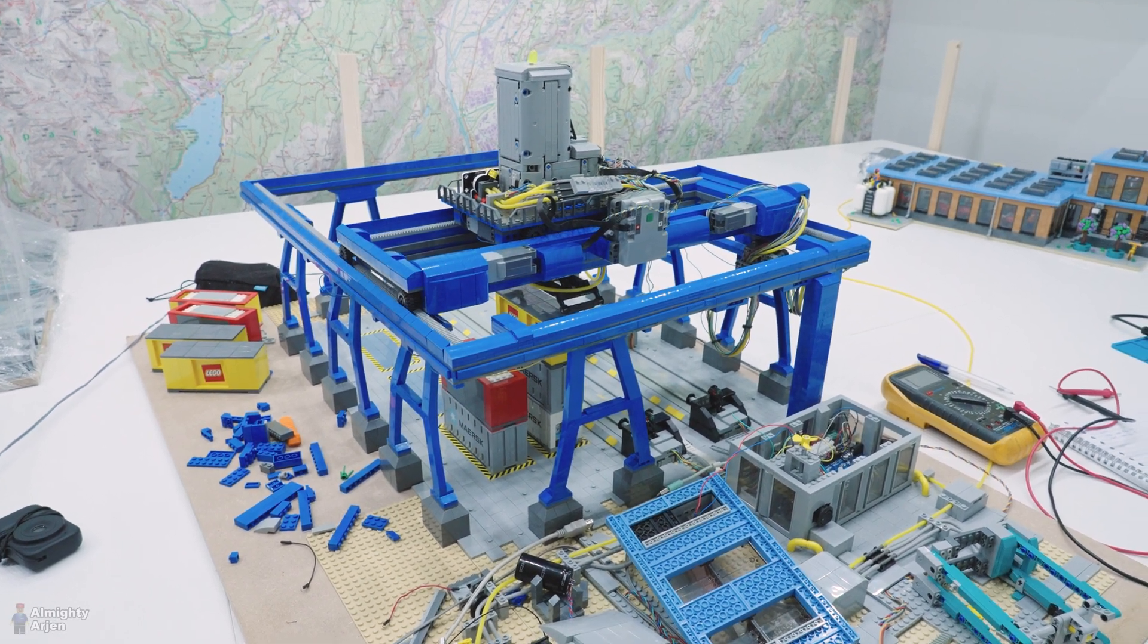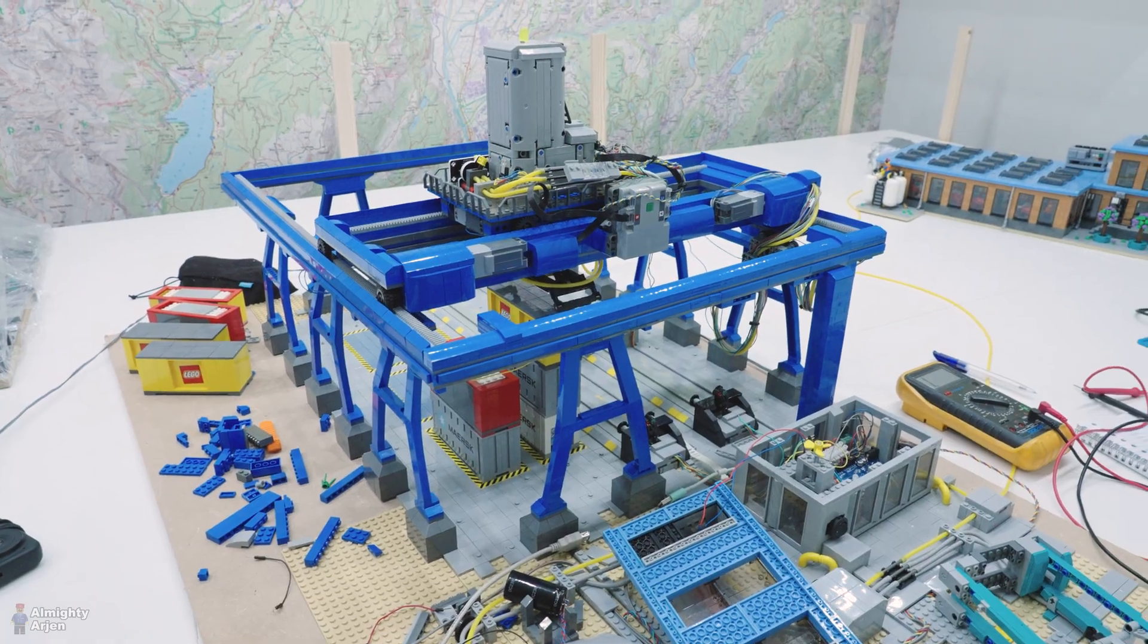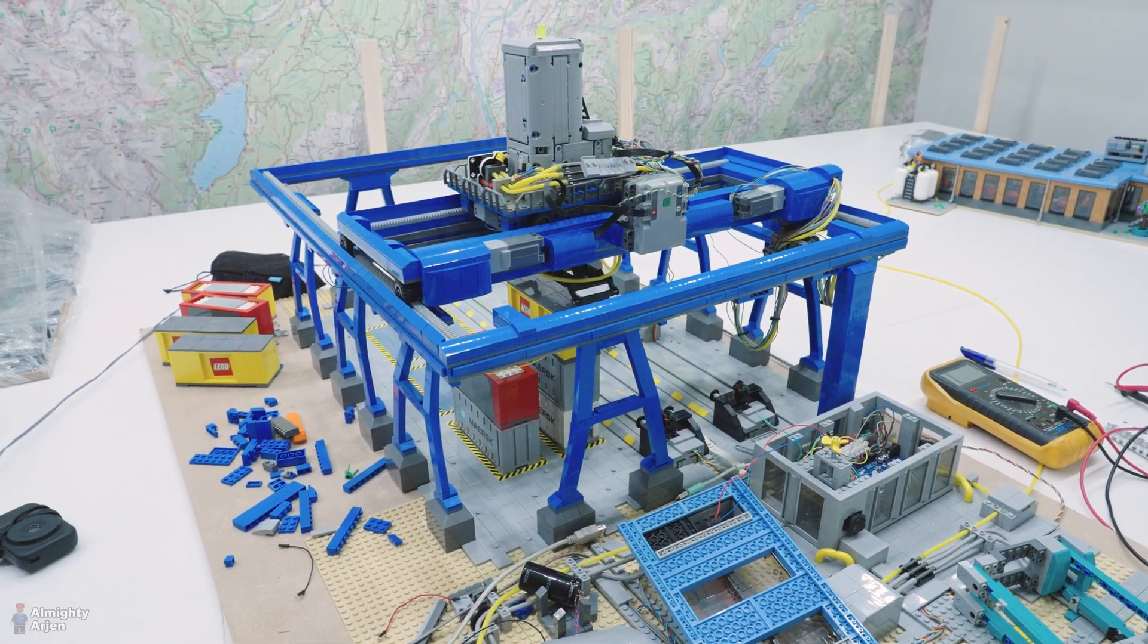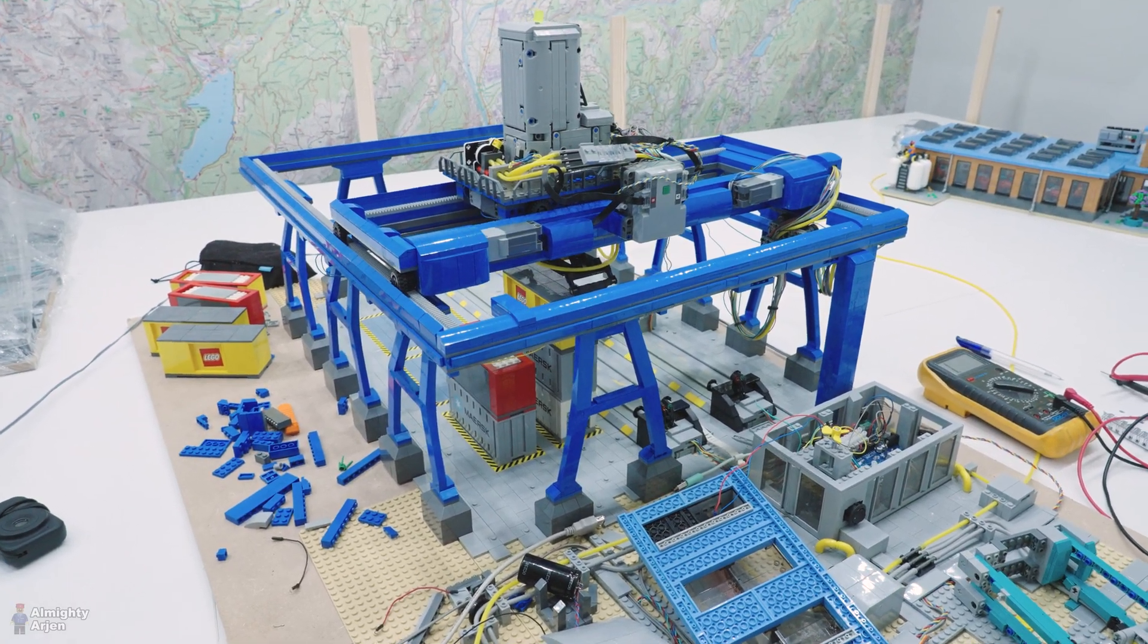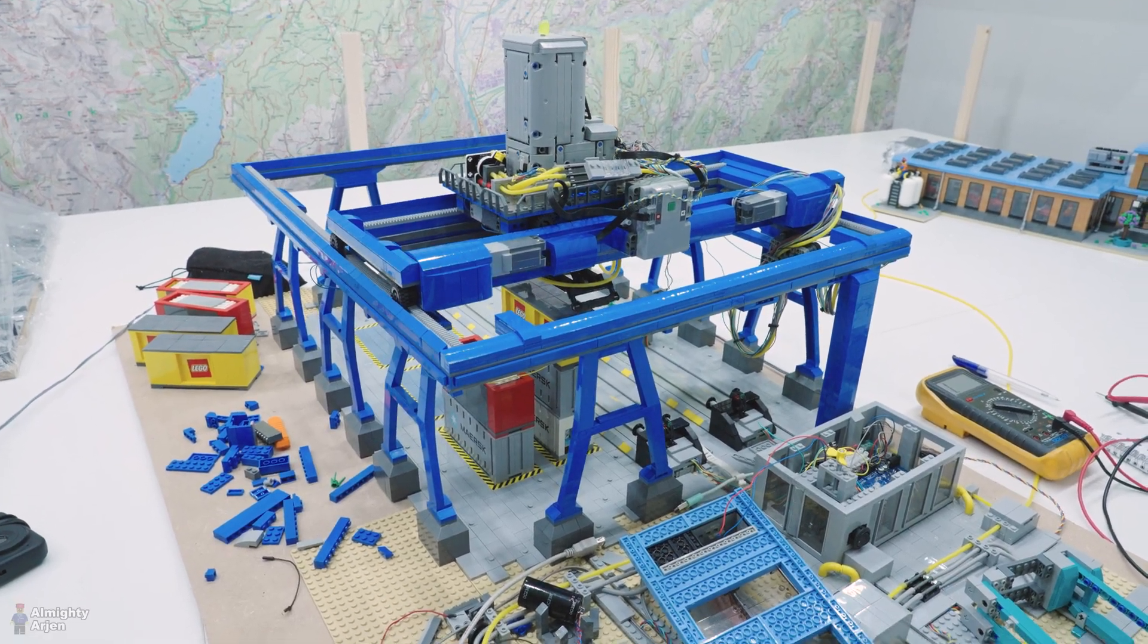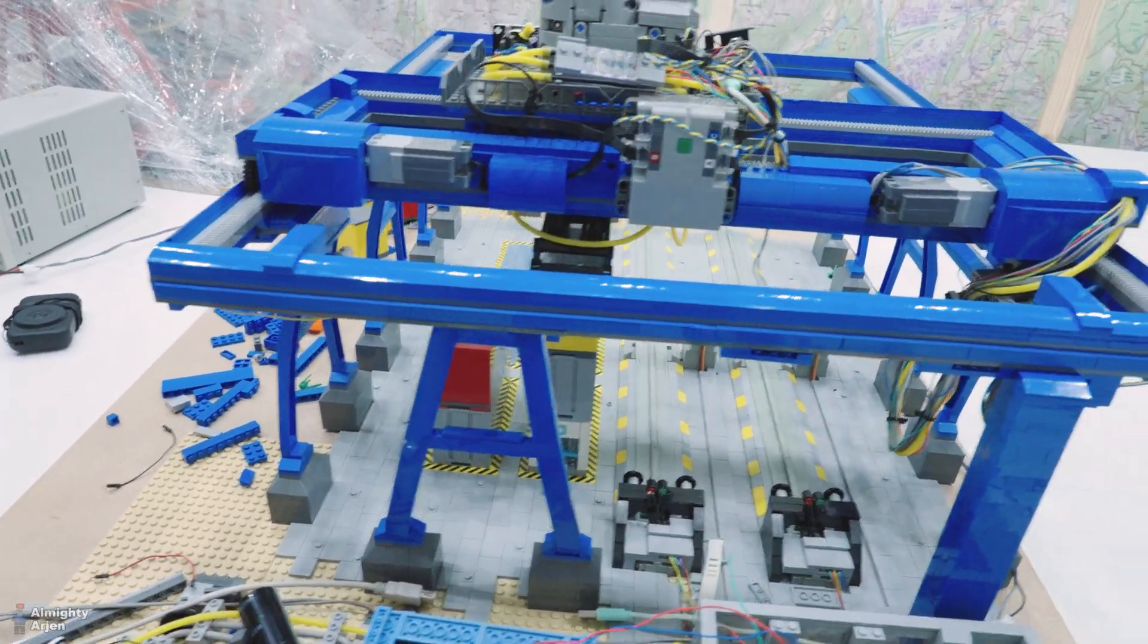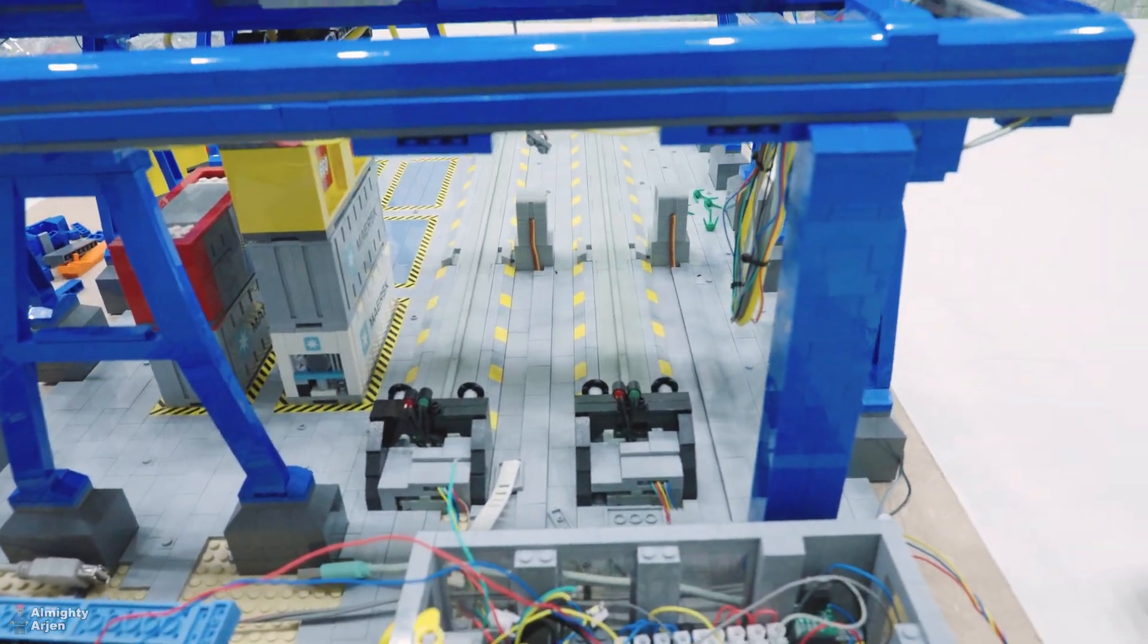Hey everyone, welcome to another episode about the LEGO train automated container terminal. Maybe you've already seen the reel on my main channel - I got the blue crane working again, and it can transport containers around the container yard, not yet on the tracks you see here, but only on the container yard which works just fine.